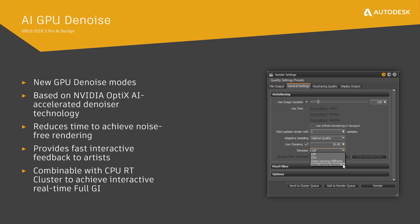This feature requires an NVIDIA GPU of Maxwell or Pascal generation, GV100, or RTX. Due to the fact that GV100 is especially made for AI operations, this card performs best for denoising. You can use GPU denoising in combination with CPU ray tracing, and therefore on top of your cluster if the master has one of the mentioned cards.